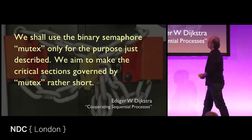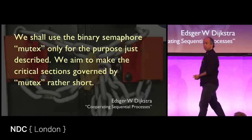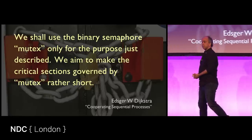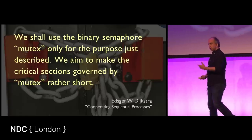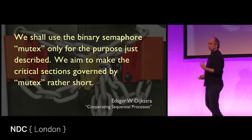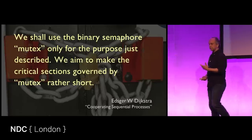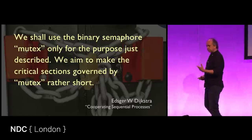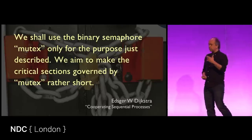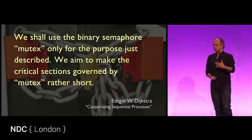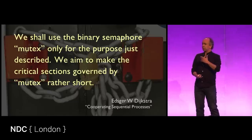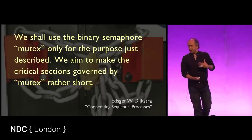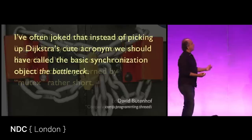Dijkstra was introducing semaphores, and he referred to one as a mutex — he just gave it the name mutex for mutual exclusion. That name was then later picked up to give a much more specific meaning: a lock with affinity. In other words, it knows who locked it, so somebody else can't come and unlock it. That's the distinction. And he talked about critical sections — we aim to make critical sections governed by mutex rather short. This very simple piece of advice was Dijkstra writing in 1968. There is a small chance we might have learned a couple of things since then, but there are days when I wonder.